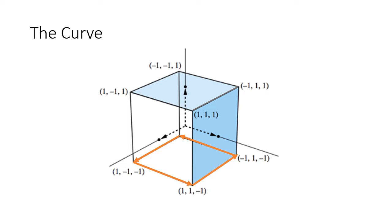Our surface does not have the bottom of this cube, which means that part is open. Where those orange arrows are — that is my boundary path. My entire surface is enclosed by that boundary. So I can do a line integral instead. But there are one, two, three, four different lines that I would need to parameterize to do my line integral, and again, they're not the worst lines in the world to parameterize, but that sounds terrible.